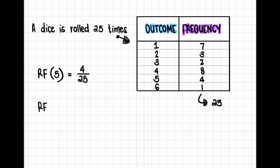Let's check the relative frequency of it landing on a four. How many times did it successfully land on a four? It landed on a four eight times, out of the 25 trials. So I have eight out of 25 as the relative frequency. But if I were looking at the theoretical probability of it landing on a four, it would still be one out of six. That's the big difference between relative frequency and theoretical probability. Relative frequency can also be known as experimental probability.